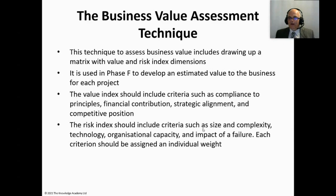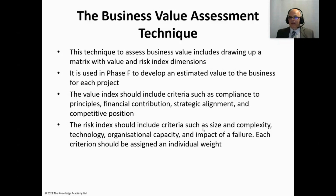The business value assessment technique allows us to look at the relative value and risk of our major projects and then use that information to determine which project to do first. It involves creating a grid or matrix with risk along one axis and value up the other, then plotting projects accordingly to give an idea of sequence and implementation. It's just one technique for determining sequence — factors such as dependencies will often override it — and it would typically only be used at a strategic level.